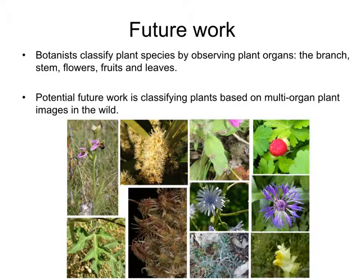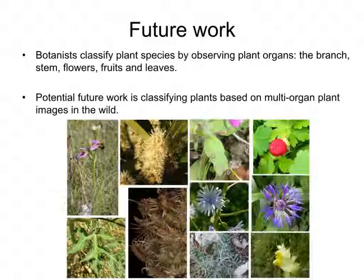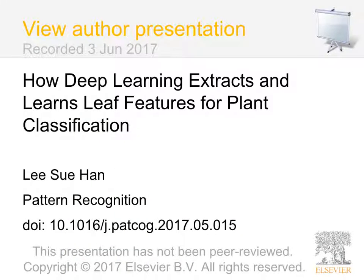Since botanists classify plant species by observing several plant organs such as branch, stem, flowers, fruits, and leaves, in future work we will extend the work to recognize plants in the wild based on multi-organ plant images. Here I end my presentation, thank you.